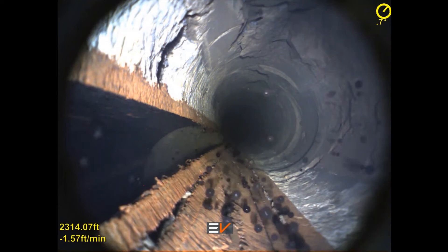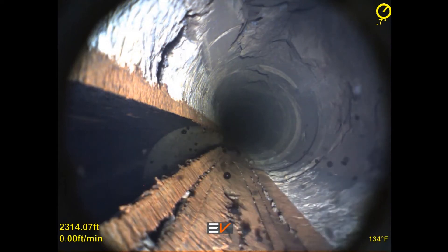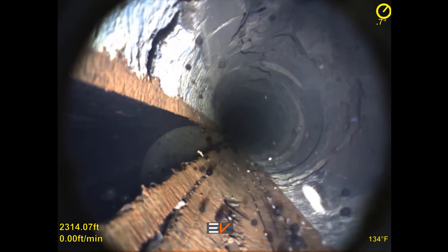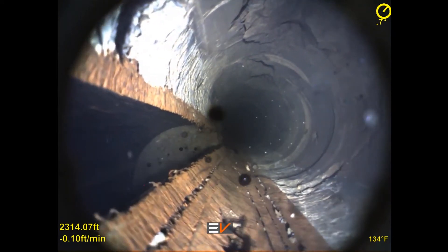The Optus Infinity camera was run in hole to a depth of 2,300 feet where the detailed real-time video footage confirmed that the mill had cut through the casing into the formation.